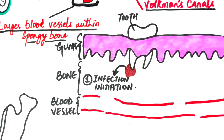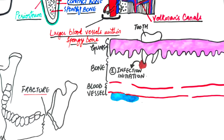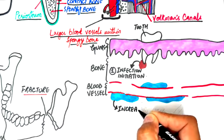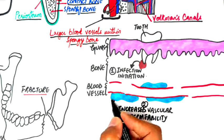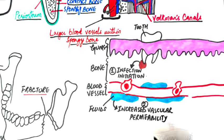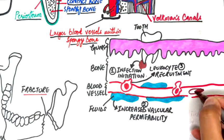The infection usually starts from bacterial invasion into the bone, mostly from dental abscesses or trauma, triggering an inflammatory response in the bone. The inflammation increases blood vessel permeability, accumulating plasma fluid and pus in the bone. White blood cells are attracted to the infection site, releasing enzymes that cause tissue damage and necrosis.